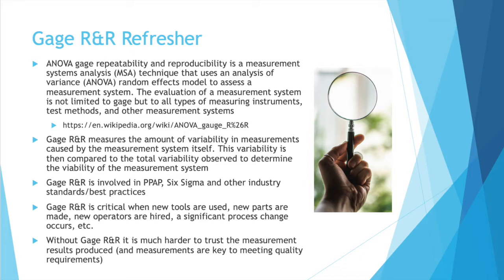You'll frequently see the term gauge R&R used with PPAP, Six Sigma, and other industry standards and best practices. It's also critical to use it when you're using a new tool, producing a new part, or have new operators, or any other significant process change, because you want to stay as close to standard as possible. Any change in parts, systems, or operators is a good reason to use gauge R&R. Without gauge R&R, it is much harder to trust your measurement system, because you don't know the variation being caused by the measuring itself.